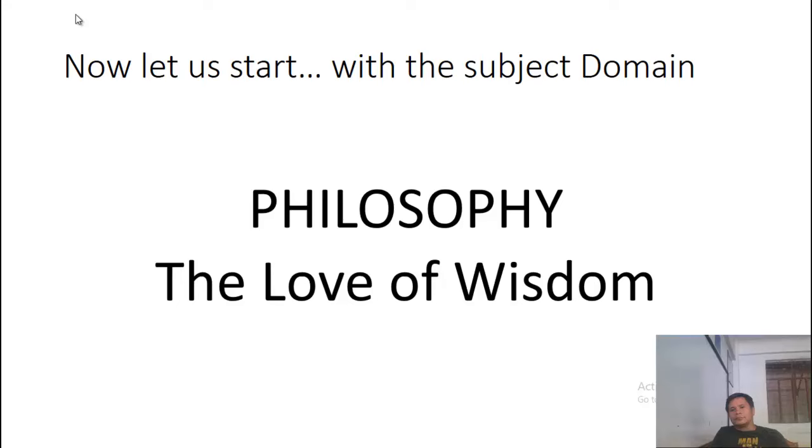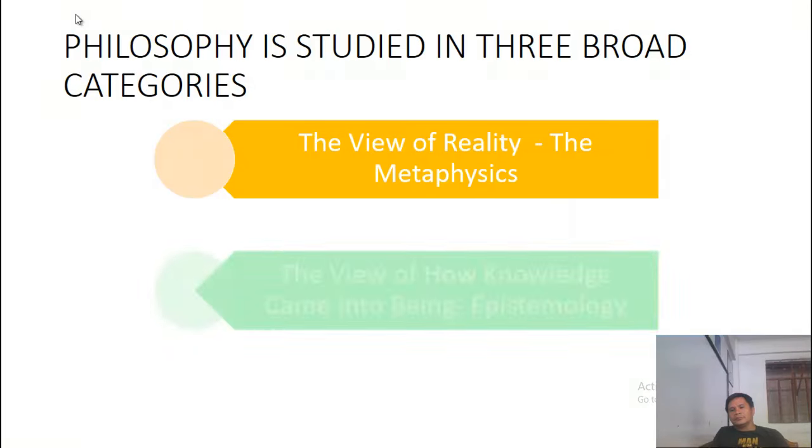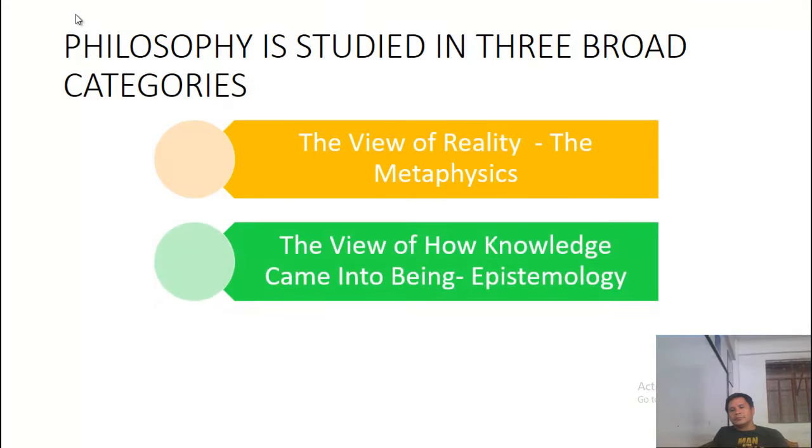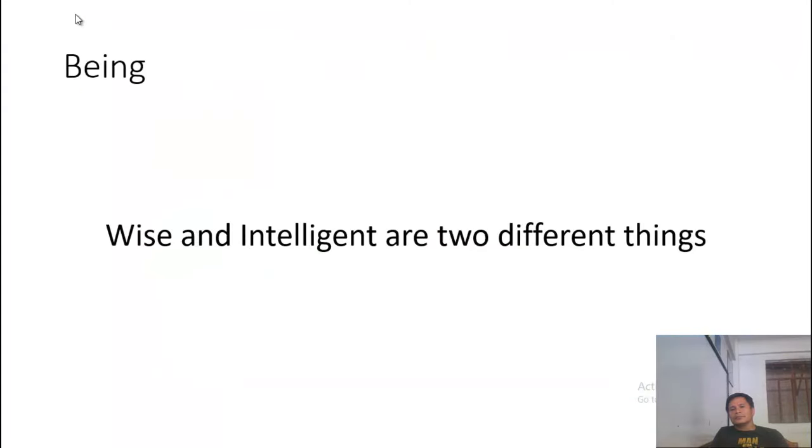Philosophy is studied in three broad categories. The view of reality: the metaphysics. The view of knowledge came into being: epistemology. The view of beauty: aesthetics or axiology. Being wise and intelligent are two different things.